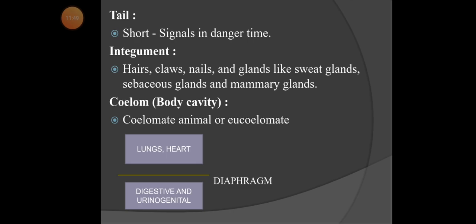The coelom is simply the body cavity. Inside the organism, some body cavity is present through which fluid circulates. Organisms are divided into three types: coelomate (having a body cavity), acoelomate (not having a body cavity), and pseudocoelomate (having a body cavity that gradually disappears). The rabbit is a coelomate animal.